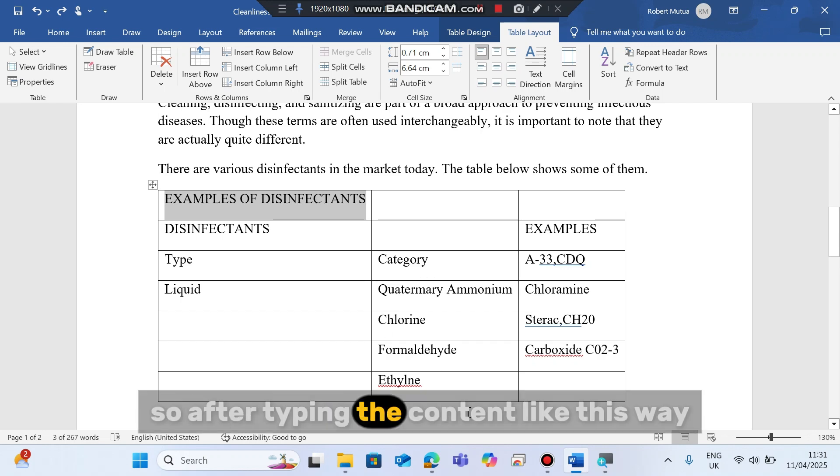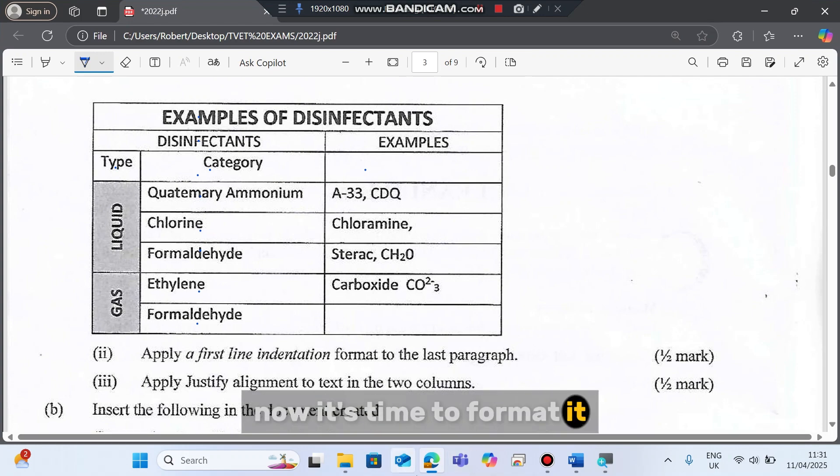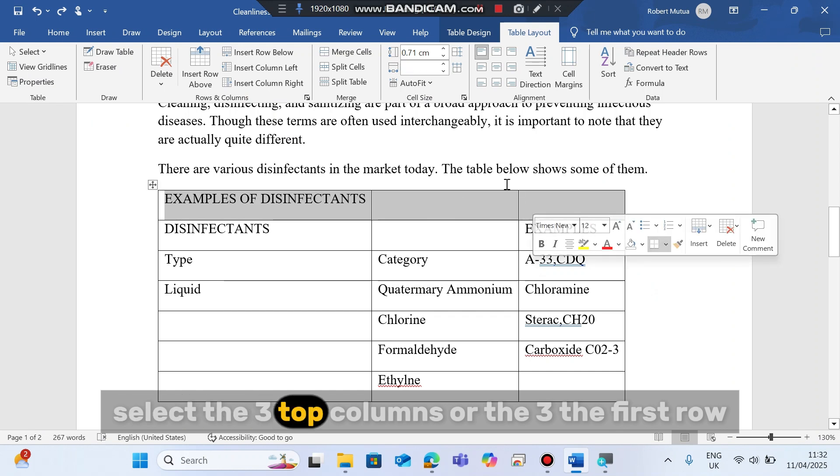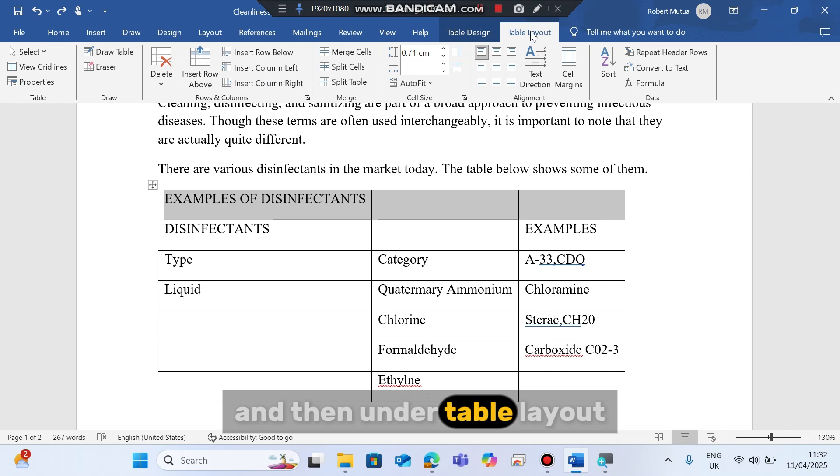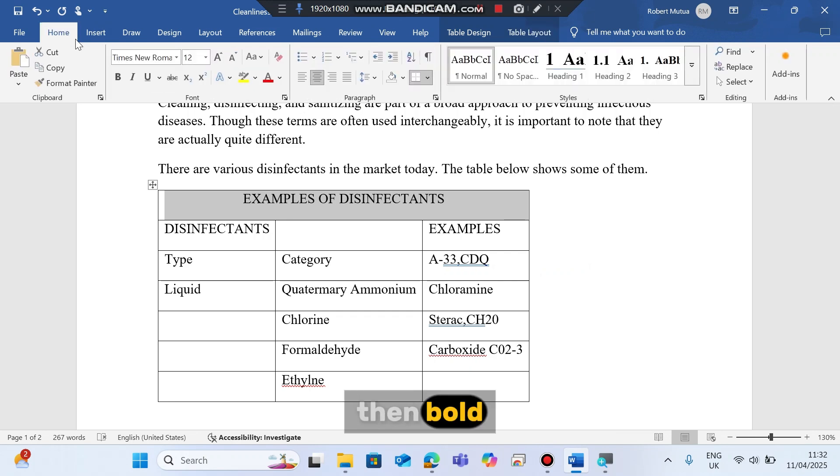So after typing the content like this way, now it's time to format it. We have the heading here. Select the three top columns or the first row, and then under table layout you're gonna find merge cells. Then center align, then bold.